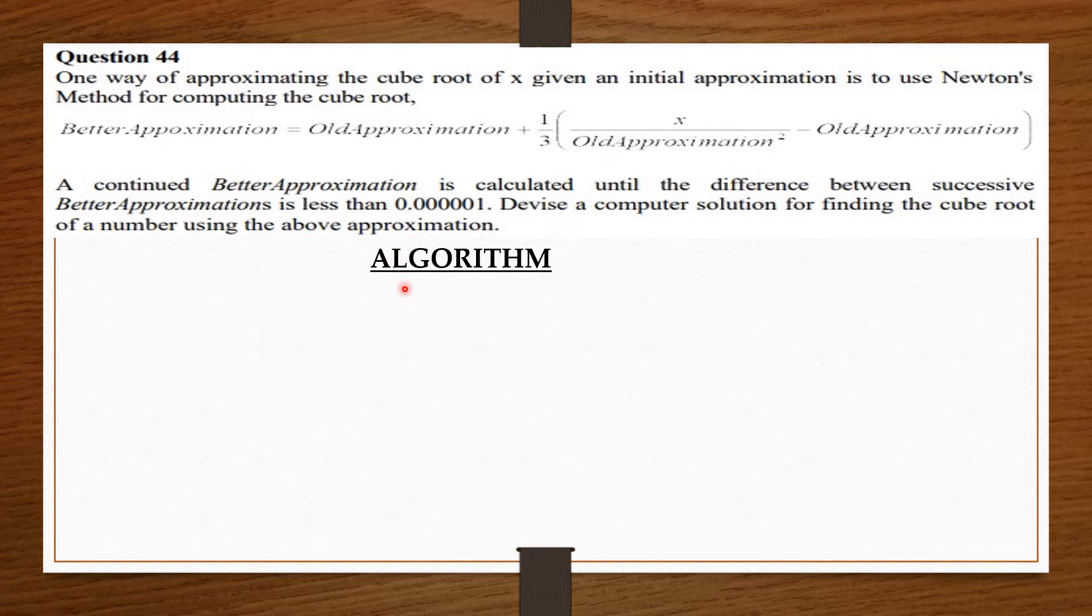We're going to ask the user to input the particular number he or she wants to find the cube root of. So we say input x in this case. Then we ask the user to input the initial approximation. So what is your initial approximation? We are going to take it as the old approx. So we say input oldApprox, which will be the initial approximation.